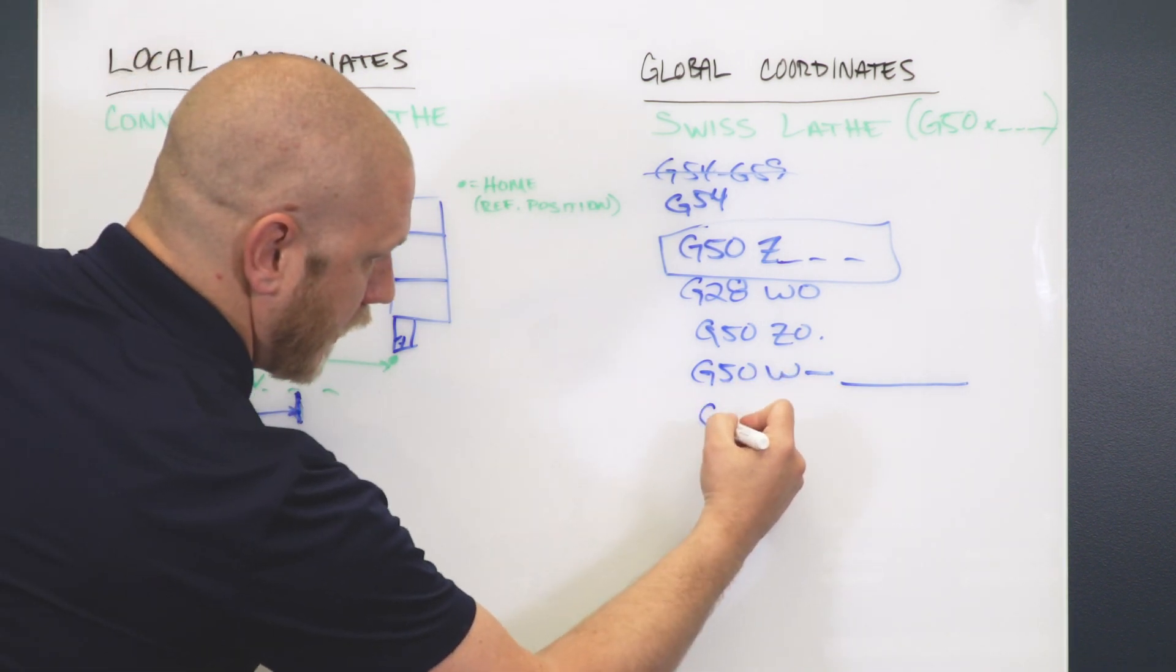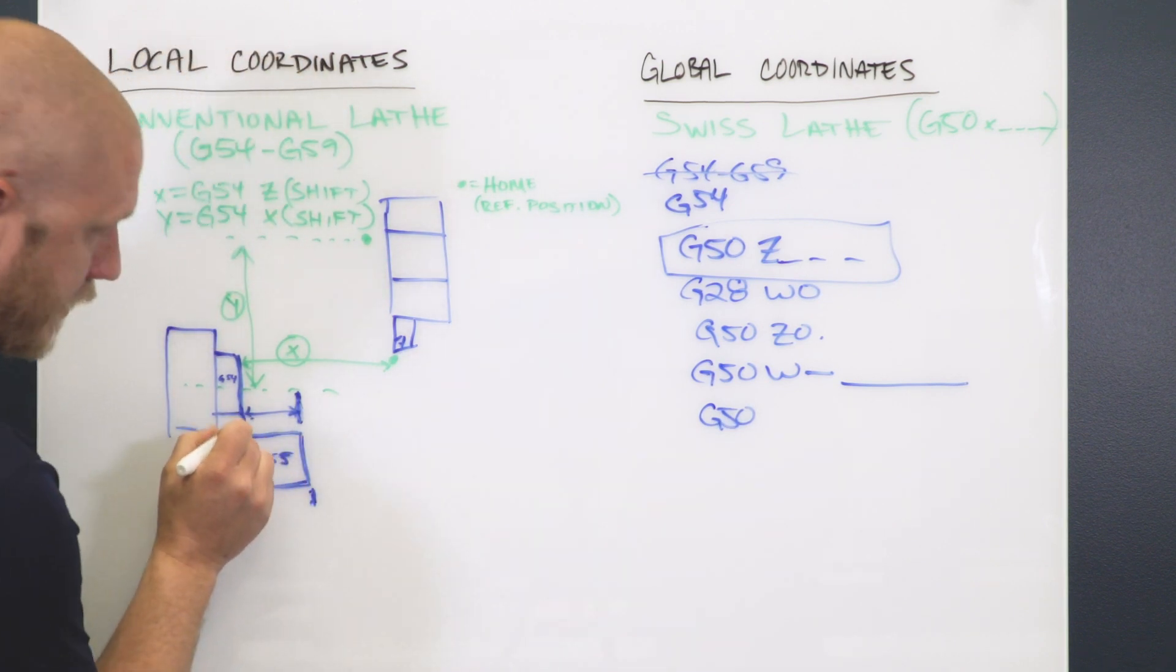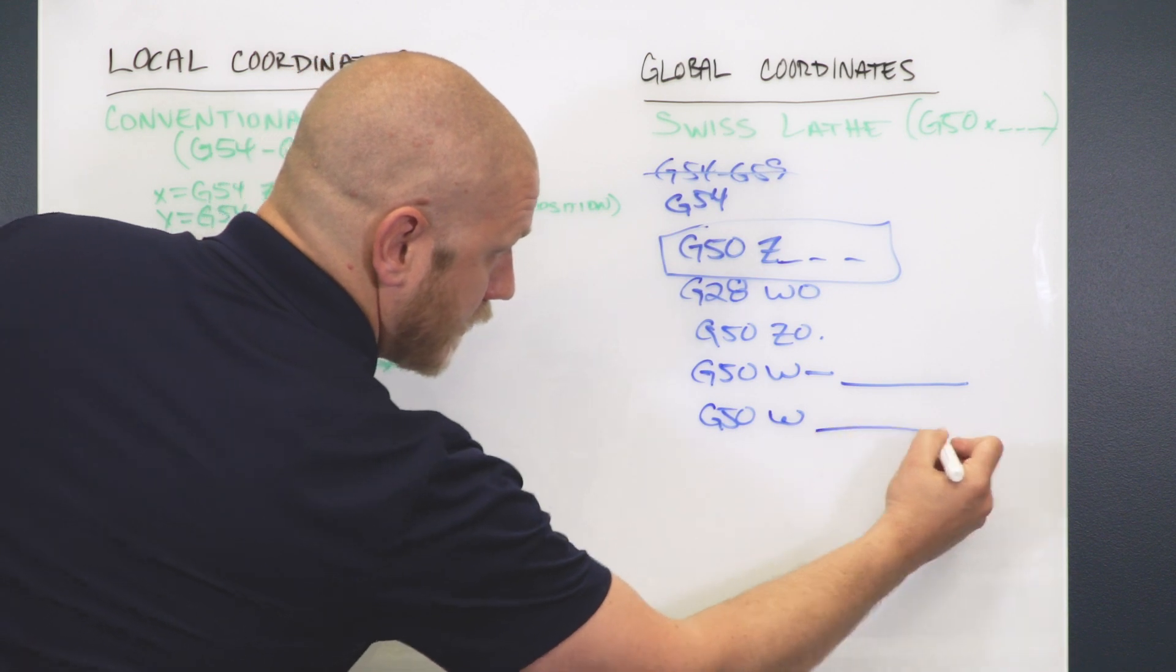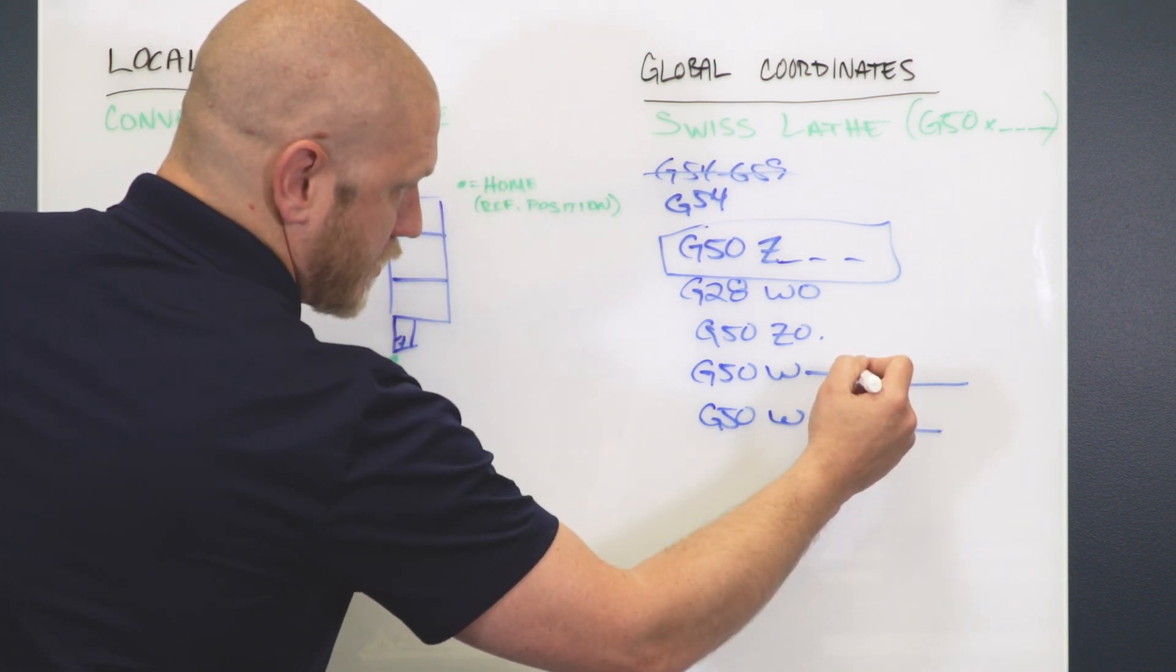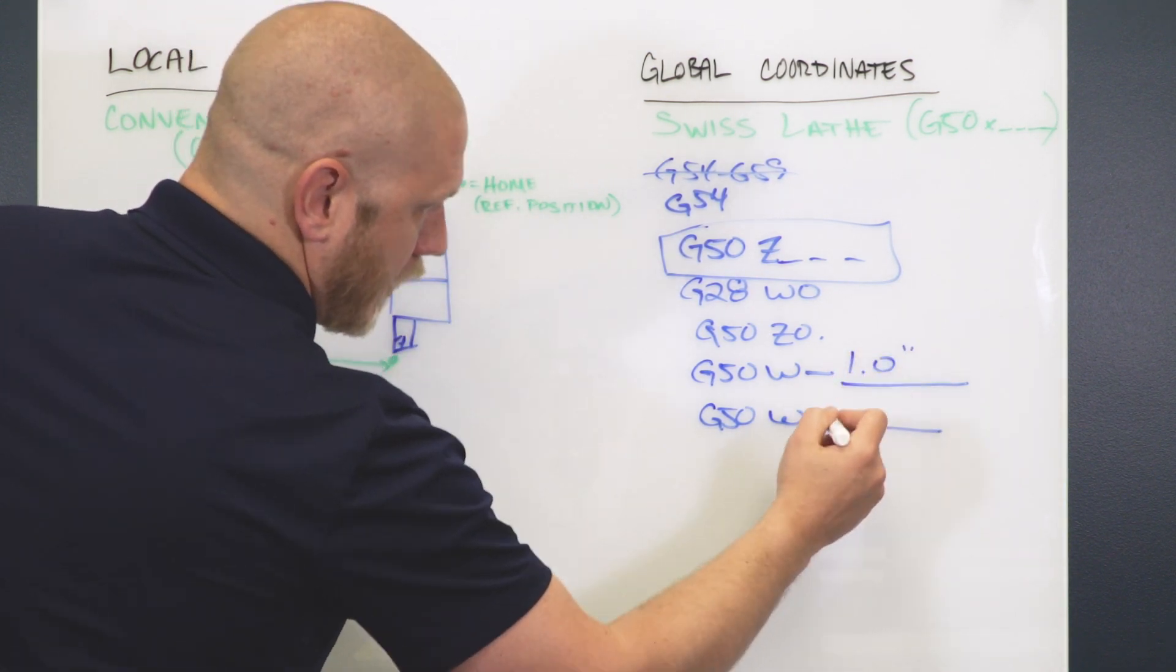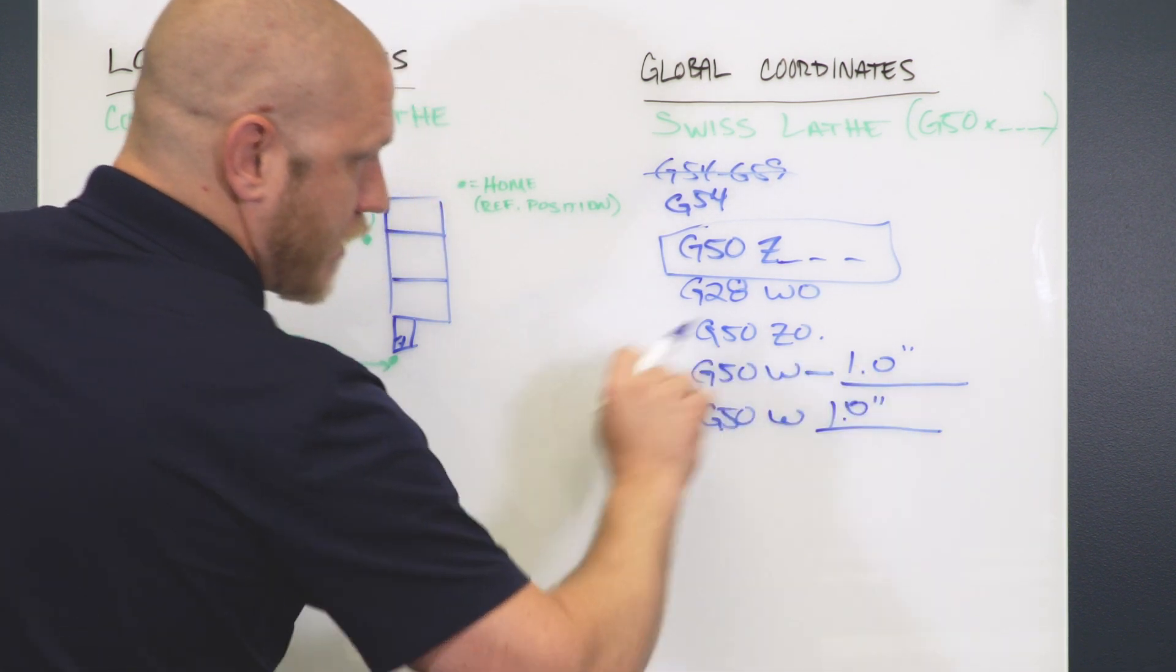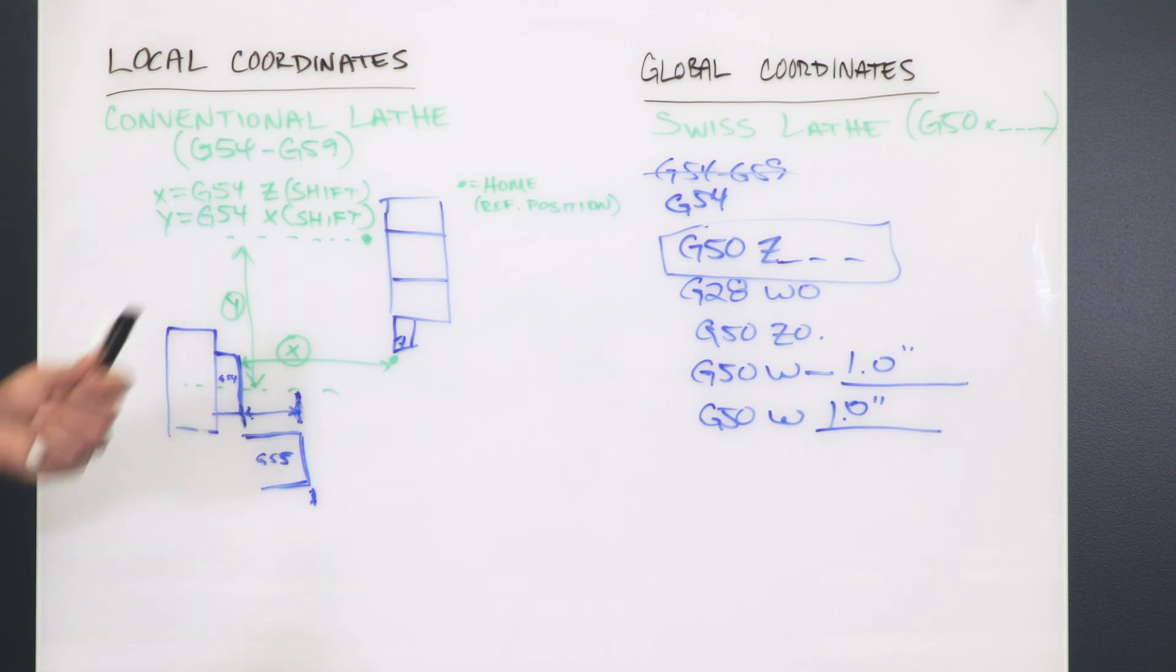When I'm all done and I want to go back to my normal Z0 beginning of the next part, I would say G50 W no minus back the same amount. So let's just call this one inch and we're going to say also one inch. So whenever I shift out, I shift back. It's the same thing as saying G55.